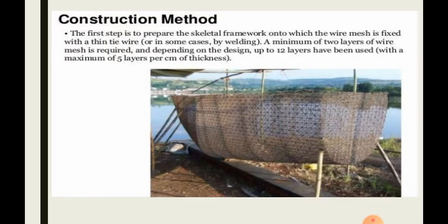Now let us go through the construction process. First, you need to determine the shape and size of the element required. Once we know that, we use multiple layers to achieve the required density of steel so that the whole structure is stiff. You can increase stiffness with small reinforcing bars. A stiff mortar is then applied on both sides of the reinforcement layers, and this is known as the armature, finished to the required thickness.